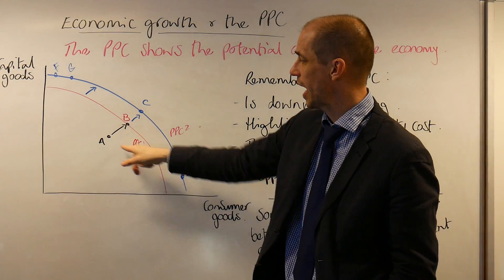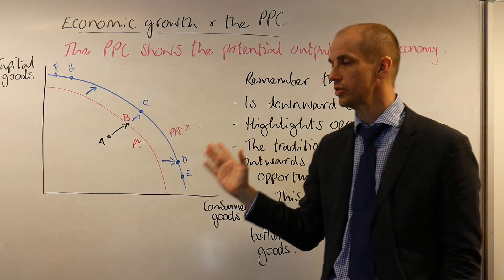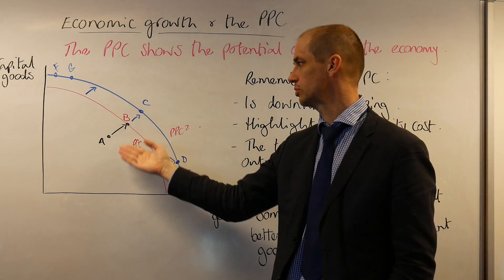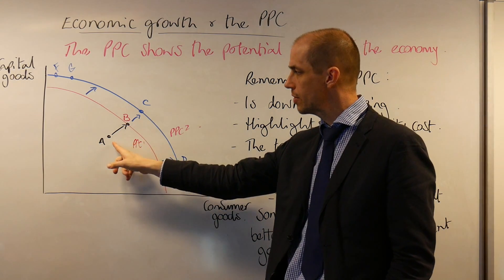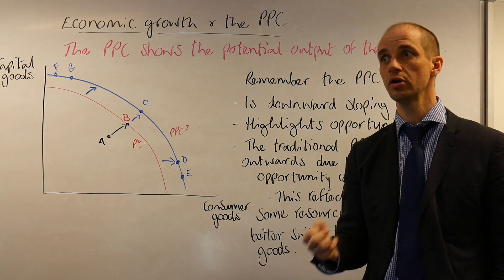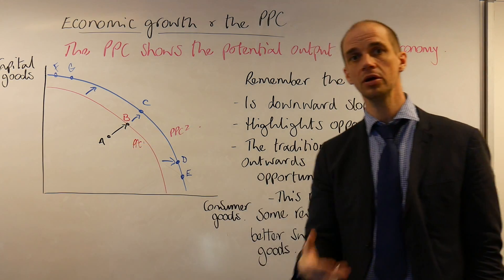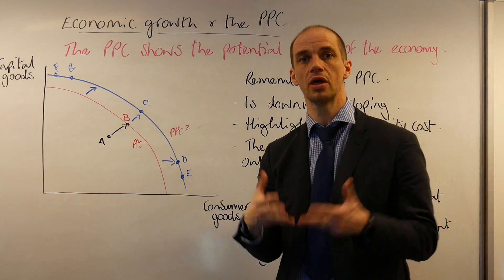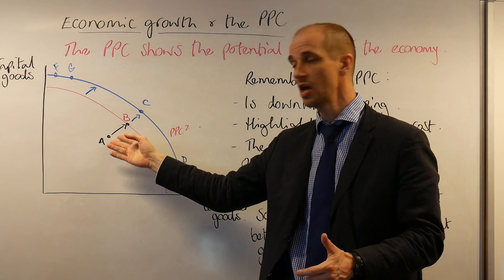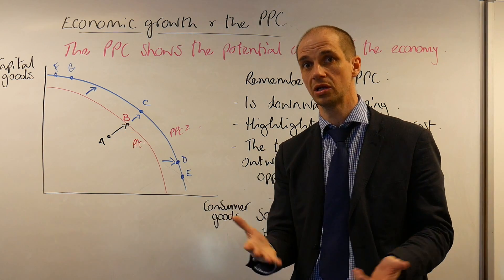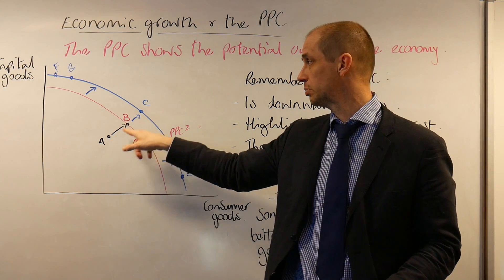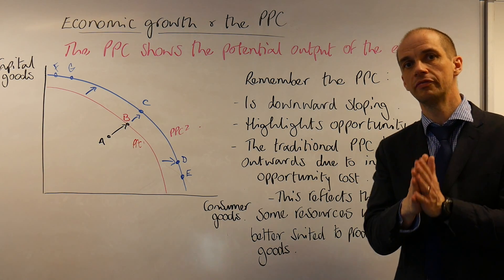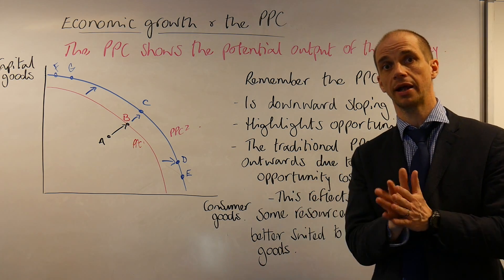If we begin at point A — bearing in mind that the economy has PPC1 as the boundary of its production possibilities — and we improve the actual employment of labour, utilisation of land, investment into capital goods, and ensure better resource allocation and utilisation, then the economy could move to point B on the edge of its PPC. That would reflect short-run improvements in economic growth.